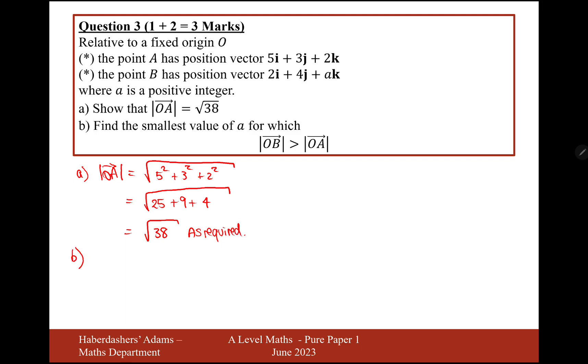Moving on to part B. Find the smallest possible value of a for which |OB| > |OA|. Well let's work out what |OB| is then. We've got a in there, so it's going to be a bit more complicated. It's going to be 2 squared plus 4 squared plus a squared. And that's going to give us 4 and 16, so that's 20 + a².